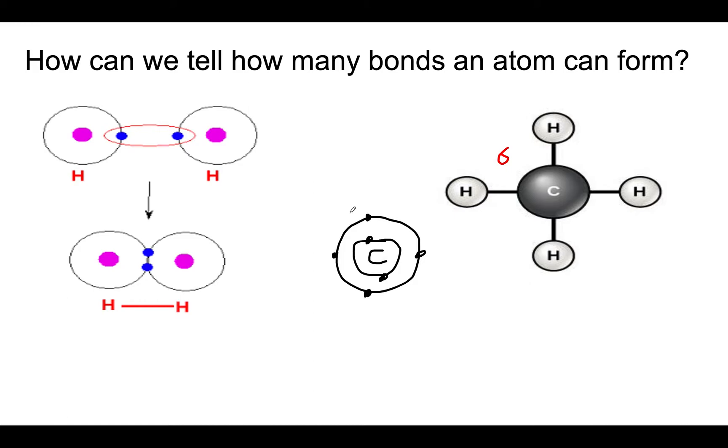It's neither energetically favorable to lose all of these electrons or to just gain four electrons from another molecule. So what carbon does, it shares its electrons with four different molecules because it needs four additional electrons. The maximum number of bonds that carbon can make is four bonds.